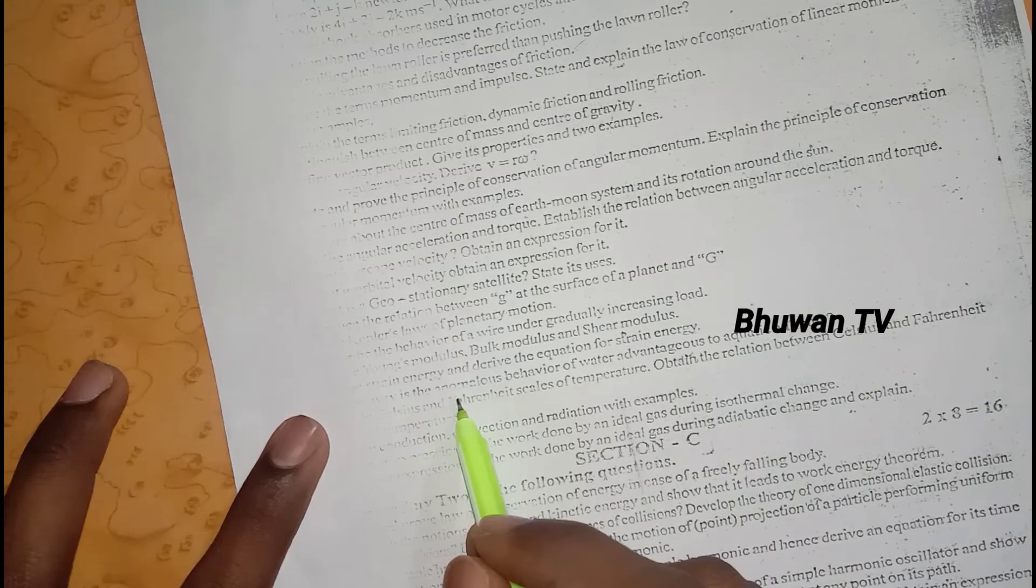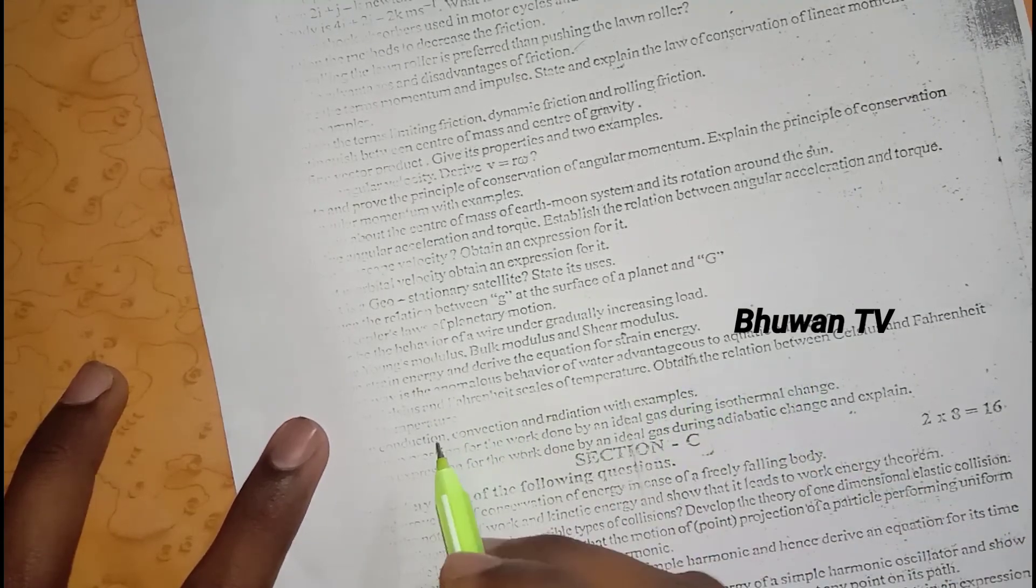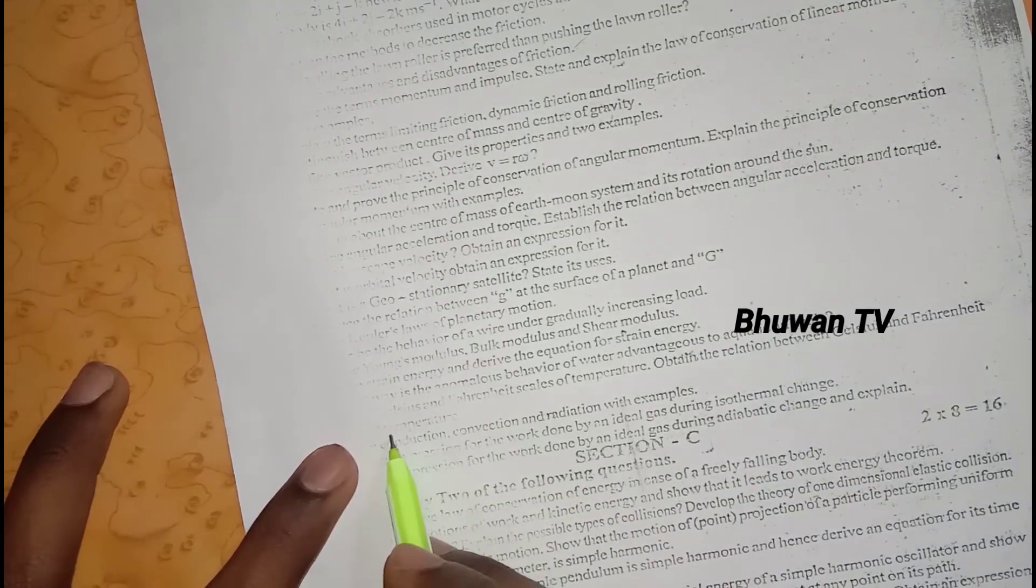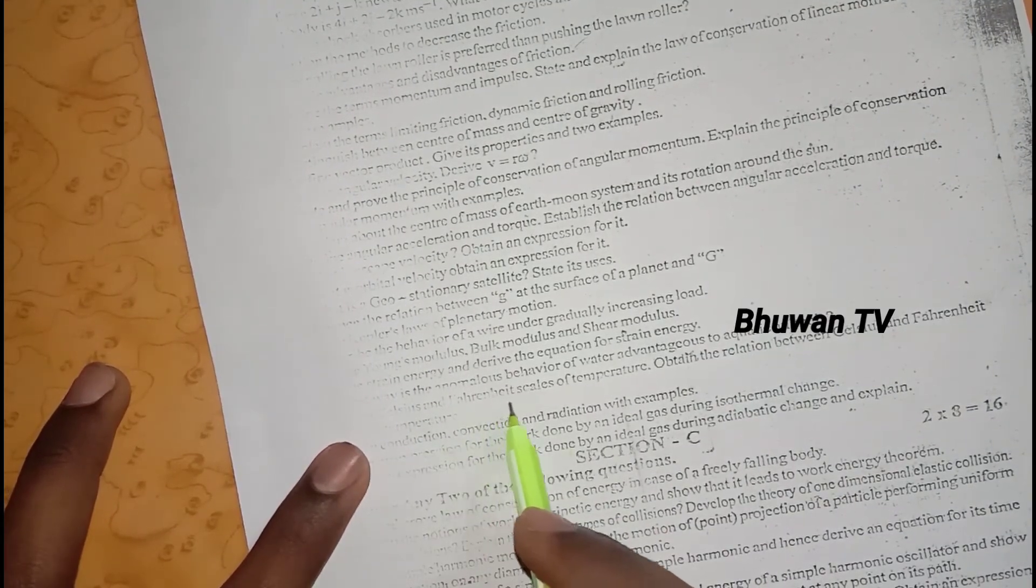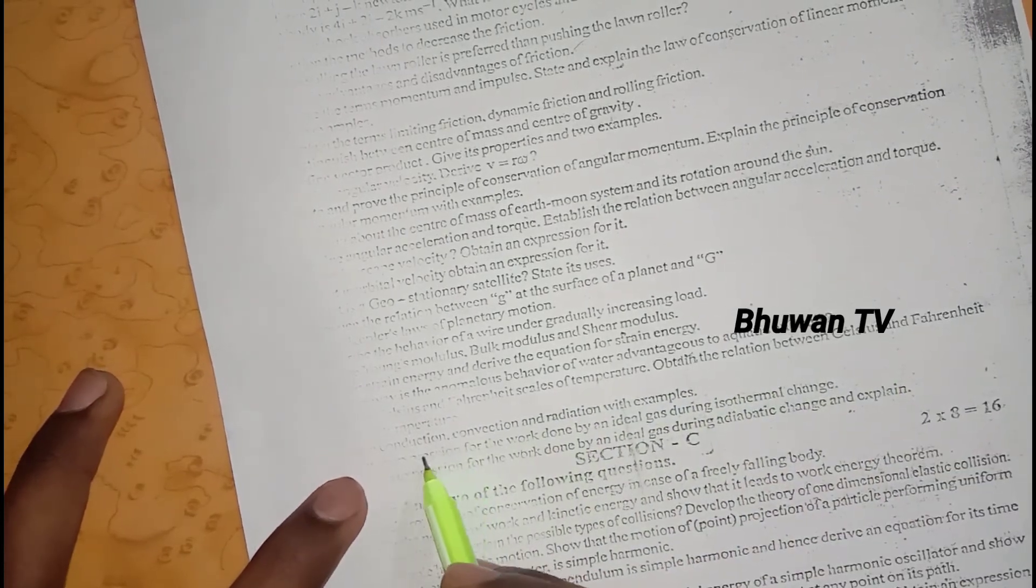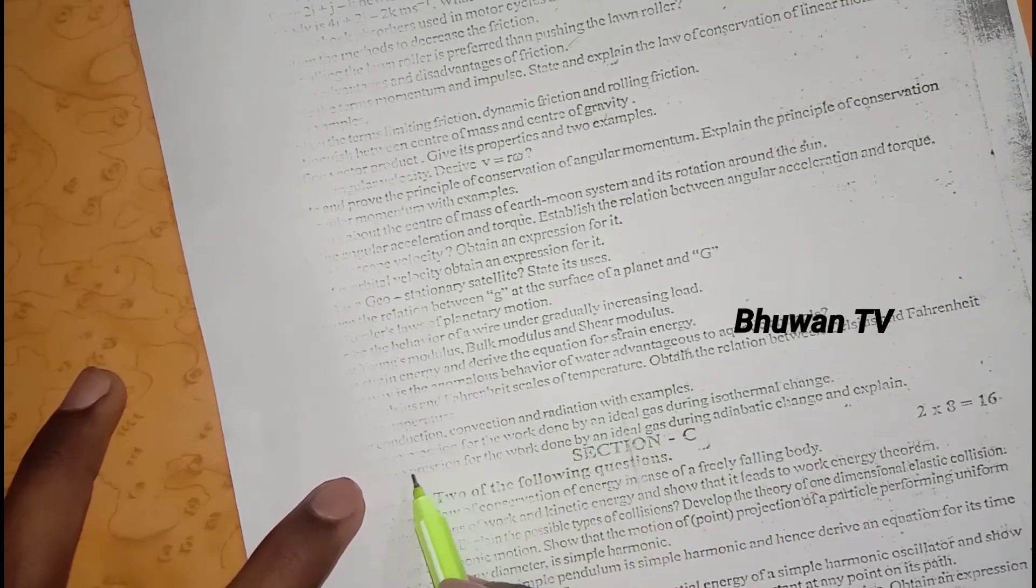Next, the anomalous behavior of water, advantages to aquatic animals. Explain the way of an ideal gas. Celsius and Fahrenheit scales of temperature, open relation between Celsius and Fahrenheit temperatures. Conduction, convection, and radiation with examples.